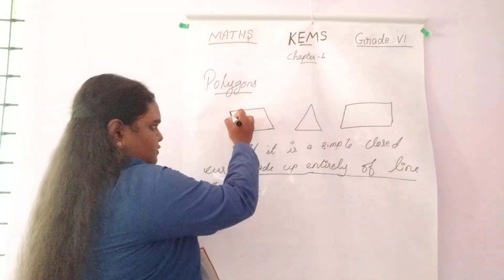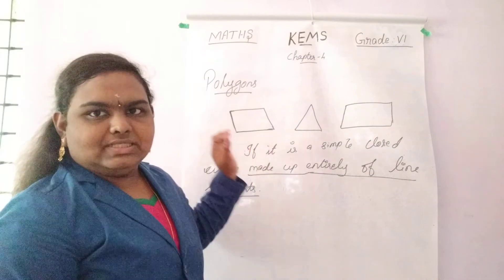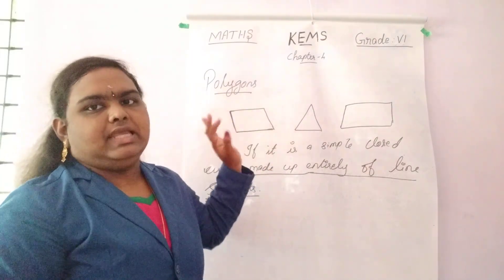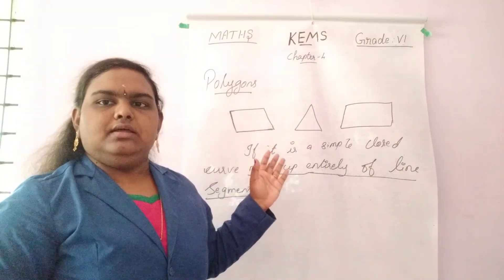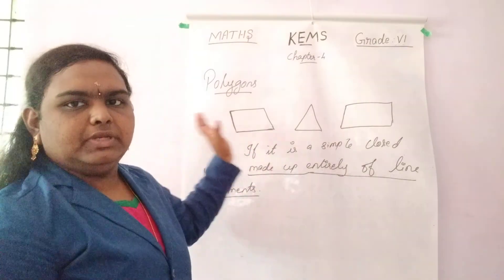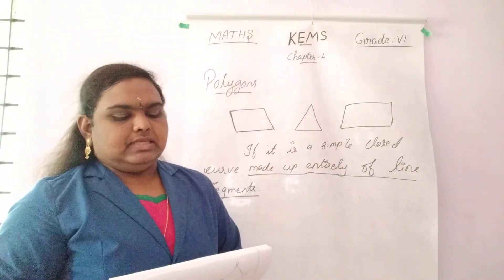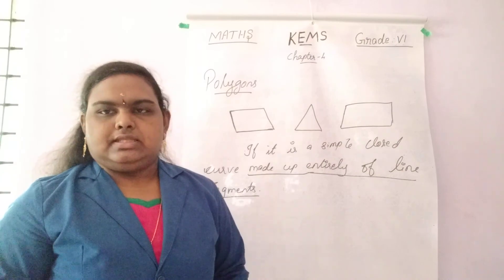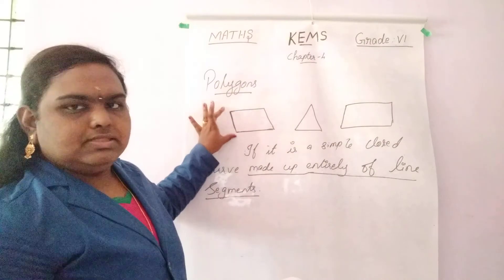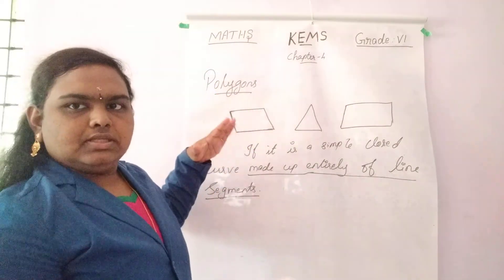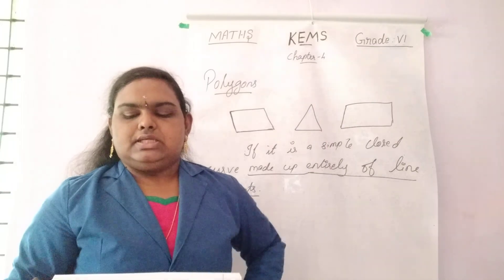These are line segments — one line segment, another line segment, and so on. The polygon here is completely made up of line segments. The line segments forming a polygon are called its sides — these are the sides: one side, another side.